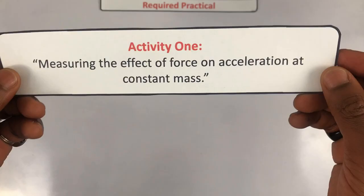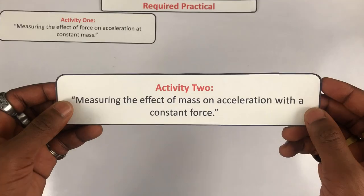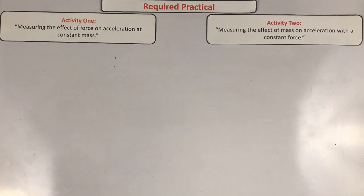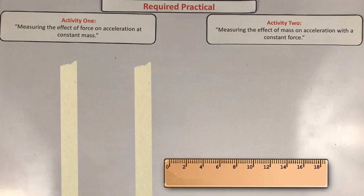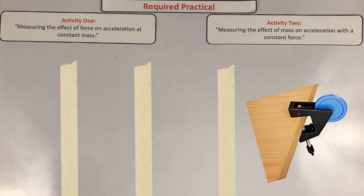This practical involves two activities. The first measures the effect of a force on acceleration at constant mass; the second measures the effect of mass on acceleration with a constant force. For the first activity, use a ruler to measure intervals on a bench and draw straight lines or place tape across the bench at those intervals, then attach a bench pulley to the end of the bench.